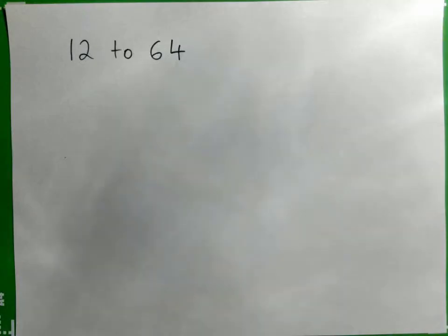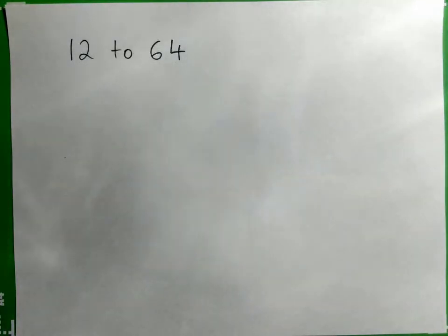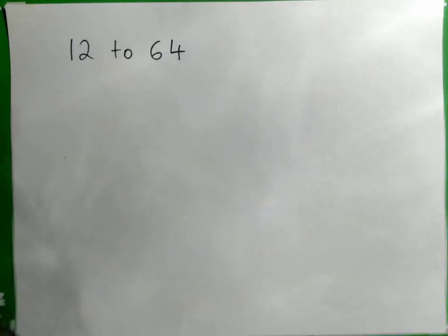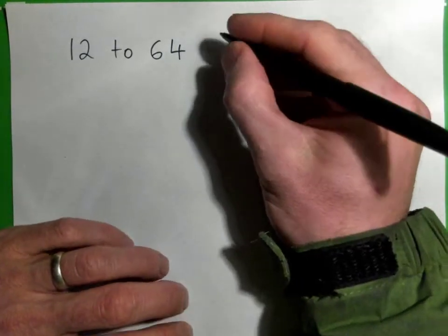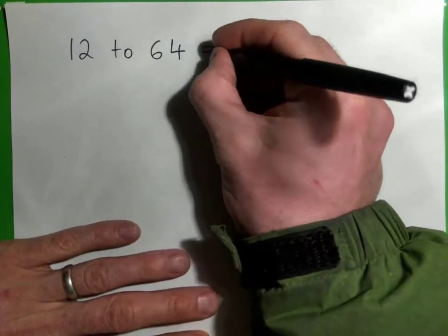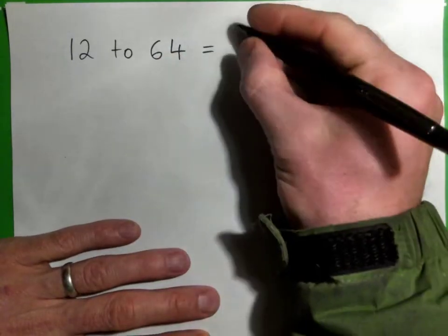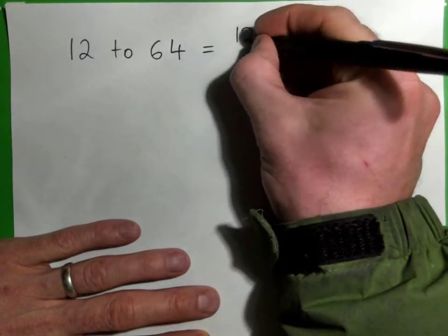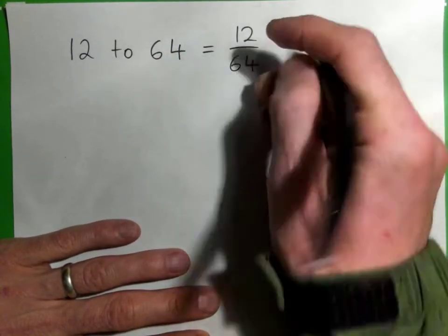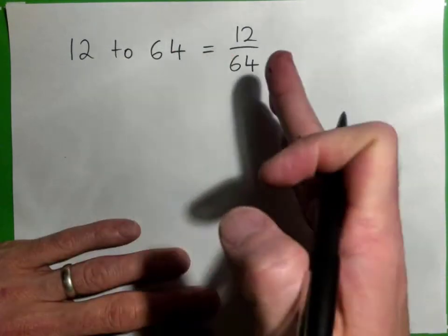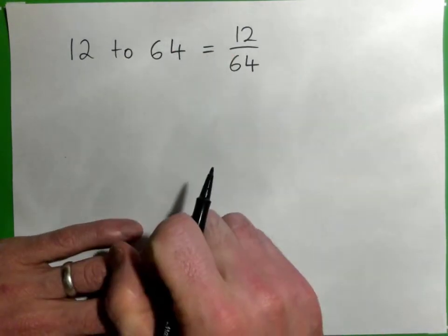We've got this ratio, 12 to 64, and we've got to put it as a fraction in lowest terms. The first thing you need to understand is a ratio can be written as 12 over 64, as a fraction. This is the ratio, and that's as a fraction.